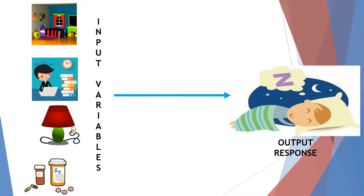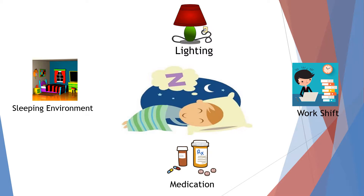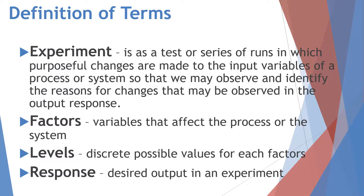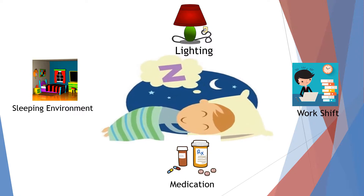So generally, the input variable is what we call the independent variable, while the output response is what we also know as the dependent variable of the experiment. The next term is factors — variables that affect the process or the system. In our simple experiment, the factors are sleeping environment, room lighting, work shift, and medication. Levels are the discrete possible values for each factor. And response is the desired output in an experiment, which in our case is the sleep quality of a person.